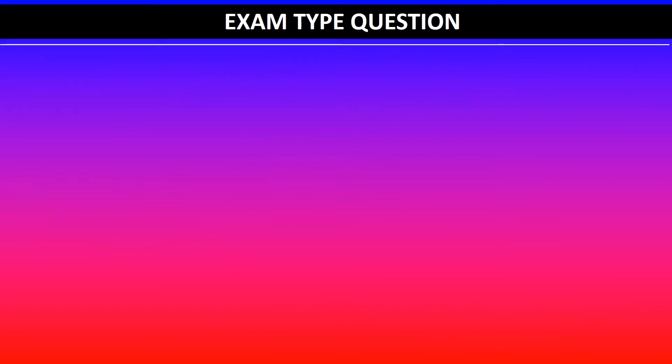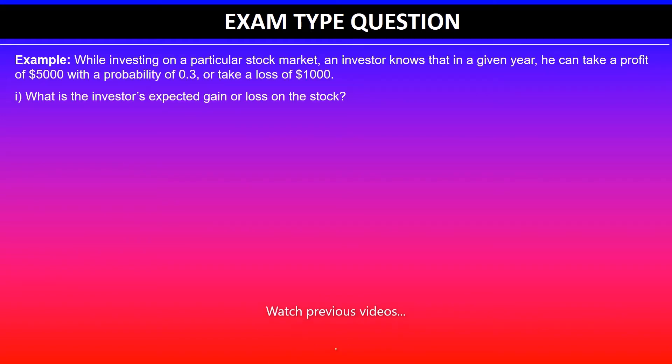So we look at the exam type question. In this example, while investing on a particular stock market, an investor knows that in a given year, he can take a profit of $5,000 with a probability of 0.3 or take a loss of $1,000.